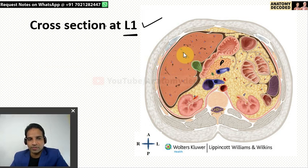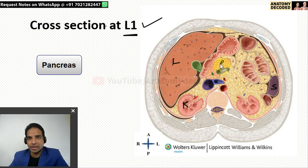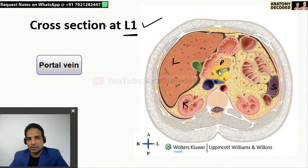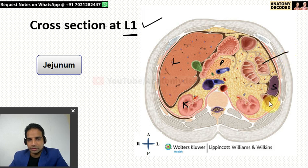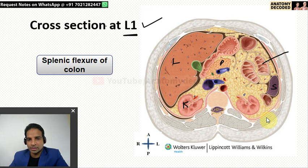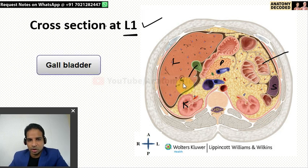There are many structures similar to the previous section. Here we can see the liver, the right kidney, left kidney, and the spleen. The 'P' which is mentioned is the pancreas — specifically the region of the neck of the pancreas. Behind the neck of the pancreas there is an important anatomical event: the union of the superior mesenteric vein and the splenic vein to form the portal vein. Here is also the inferior vena cava and abdominal aorta, the coils of the jejunum, the splenic flexure of the colon continuing as the descending colon, the transverse colon, and the gallbladder shown in green colour.